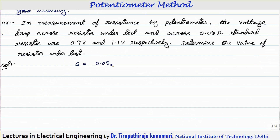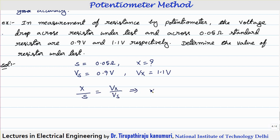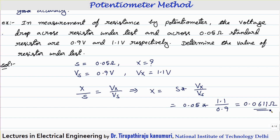The standard resistor S = 0.05 ohms. Voltage across the standard resistor Vs = 0.9 V, and voltage across the unknown resistor Vx = 1.1 V. Therefore X = S × (Vx/Vs) = 0.05 × (1.1/0.9) = 0.0611 ohms. In this way we can measure the unknown resistance using the potentiometer method. If you have any queries, leave them in the comments below. Thank you.